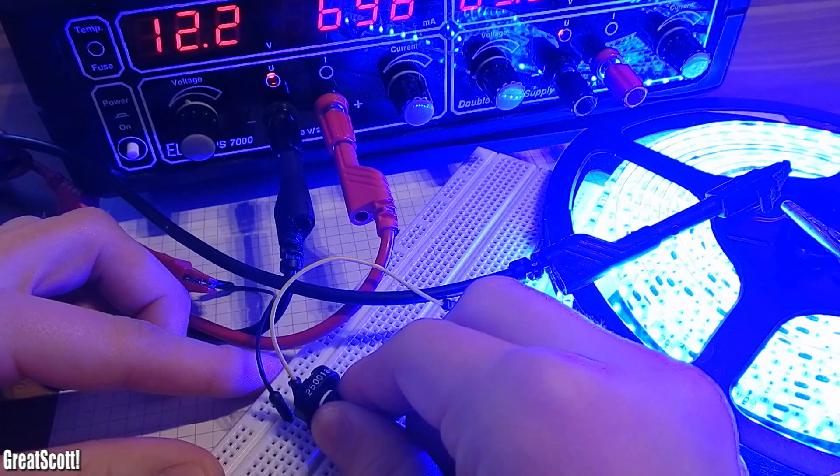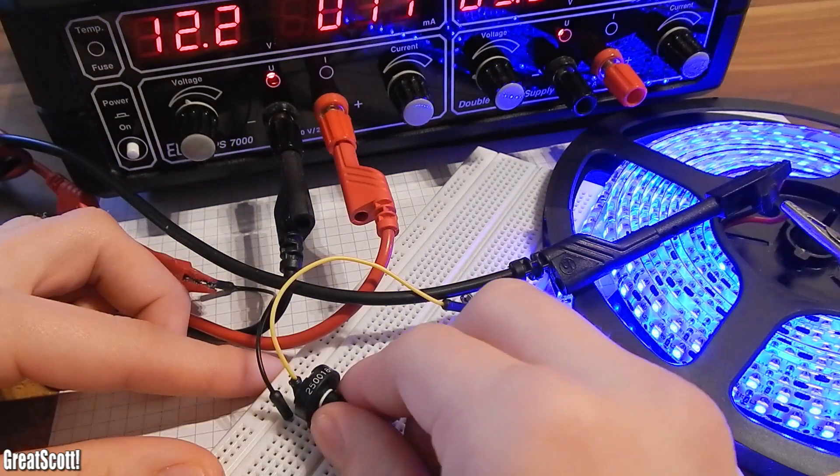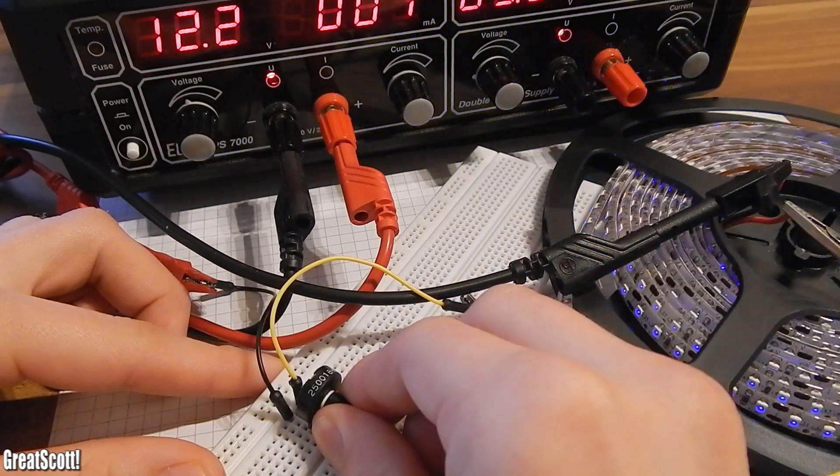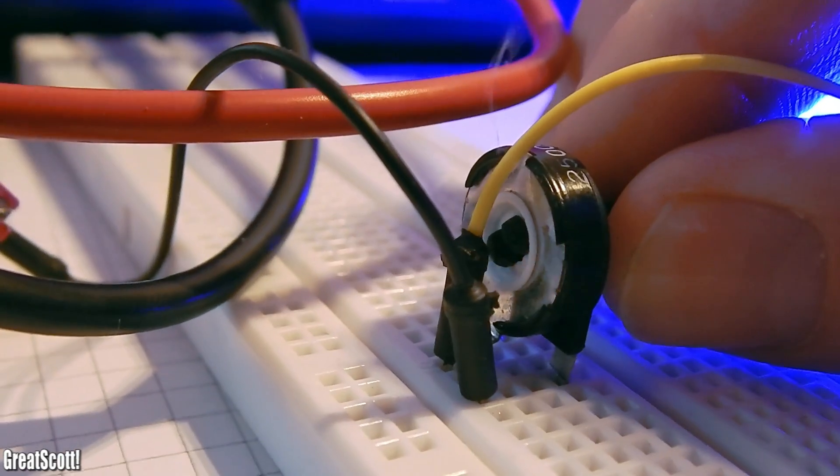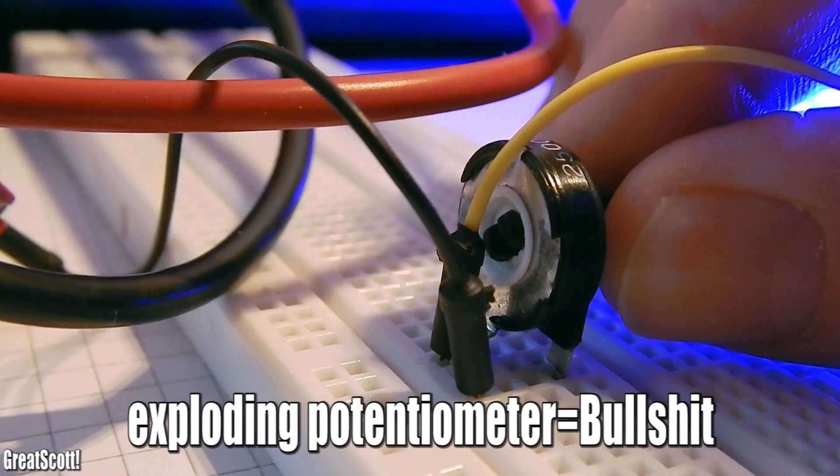And secondly, your potentiometer must be really beefy and expensive when it wants to survive dimming LEDs which require much current like long LED strips. So that's not ideal.